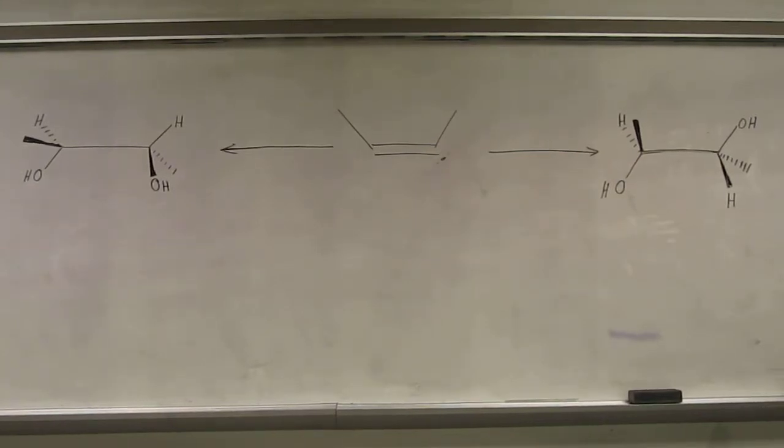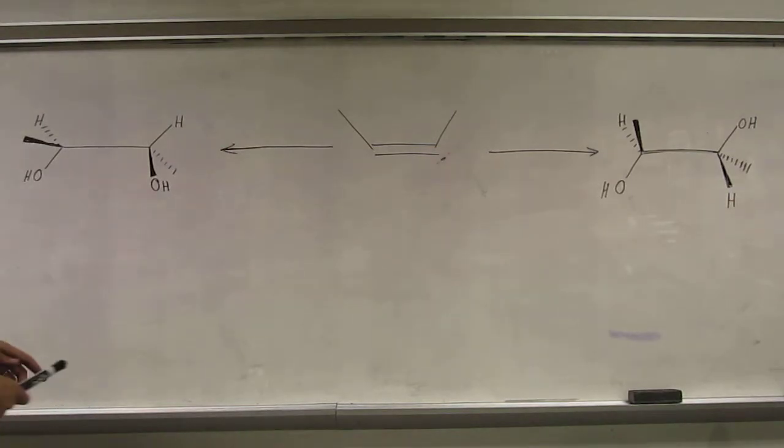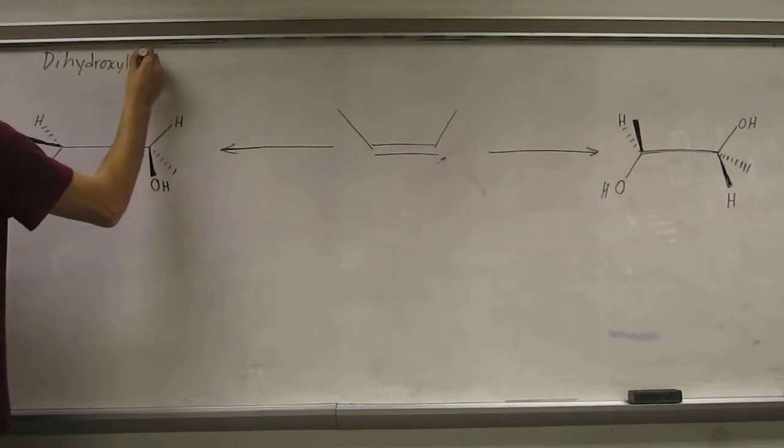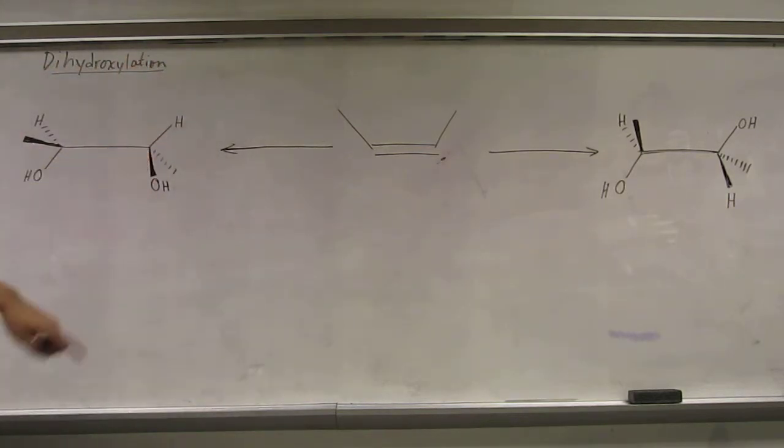Okay guys, a lot of you have been wanting to do this problem. This problem asks essentially how do you get these two different products, these two different diols from this same alkene. So this is a dihydroxylation problem and you're using this alkene.